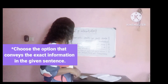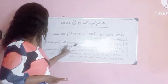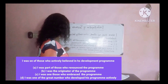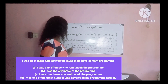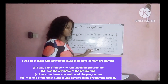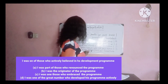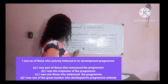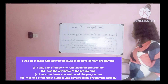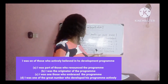For example, from the past questions you have: 'I was one of those who readily believed in his development program.' Now option A: I was part of those who renounced the program. Option B: I was the originator of the program. Option C: I was one of the people who embraced the program. Option D: I was one of the great number of people who developed his program actively. If you look at this question closely, notice that all the options contain at least a part of the information in the given sentence.